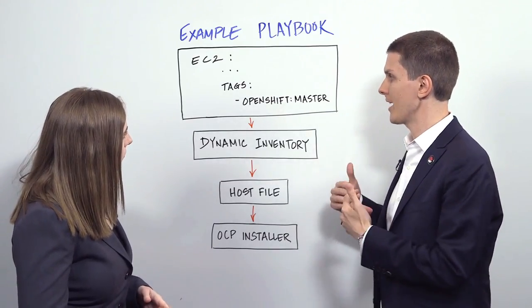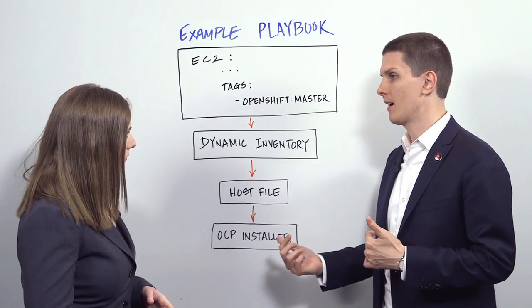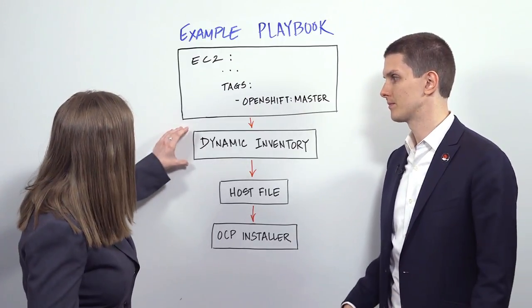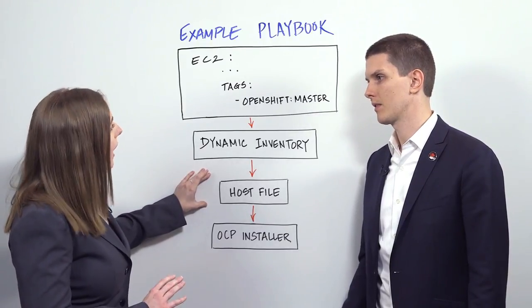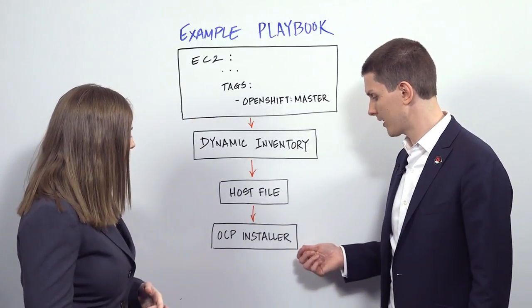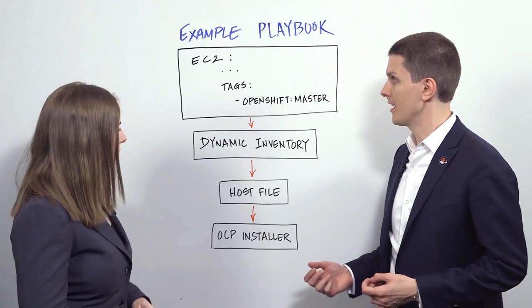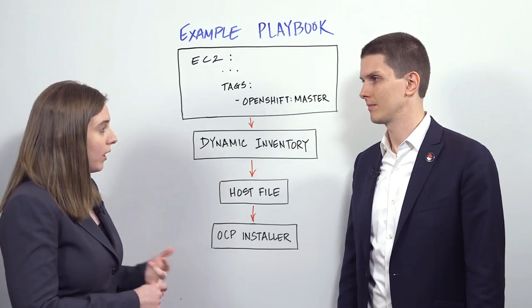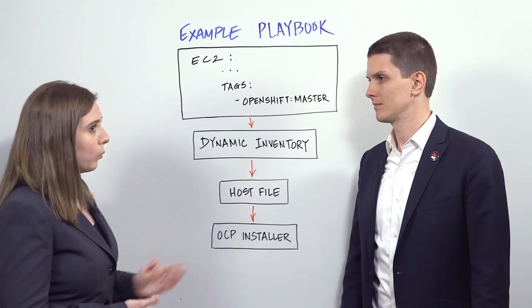Using the Dynamic Inventory to refresh all of the instances running in Amazon, you can then use it to directly generate the host file you need for the OpenShift installer. The reason you can do that is because you tagged the nodes with their functionality in the first step — which is important because the installer requires you to know what are your masters, your infra nodes, and your app nodes. That will give you an entire OpenShift deployment — as many clusters as you want, as many VPCs as you want, as many availability zones as you want — all built from nothing with just one command or one playbook.